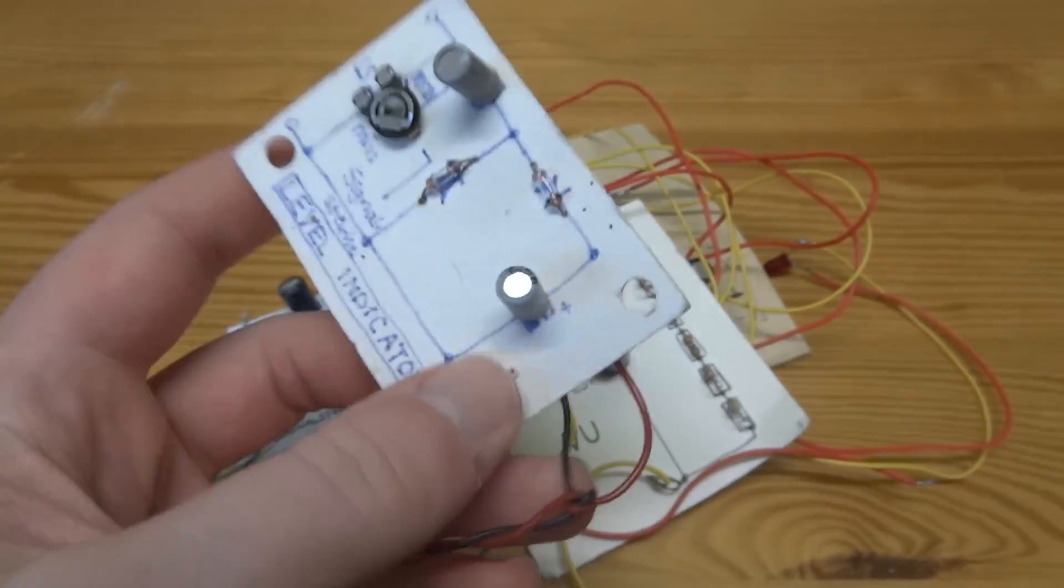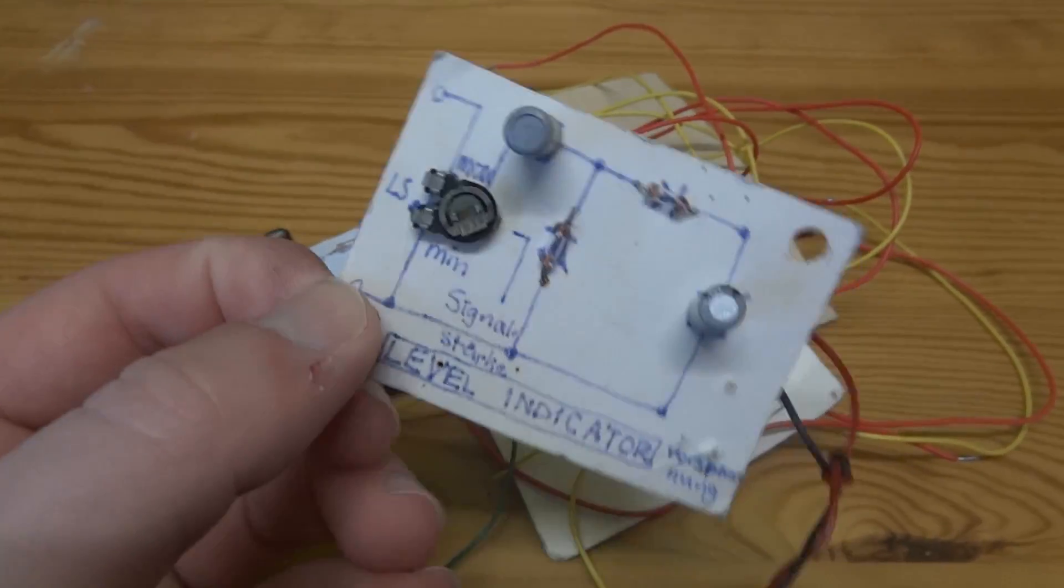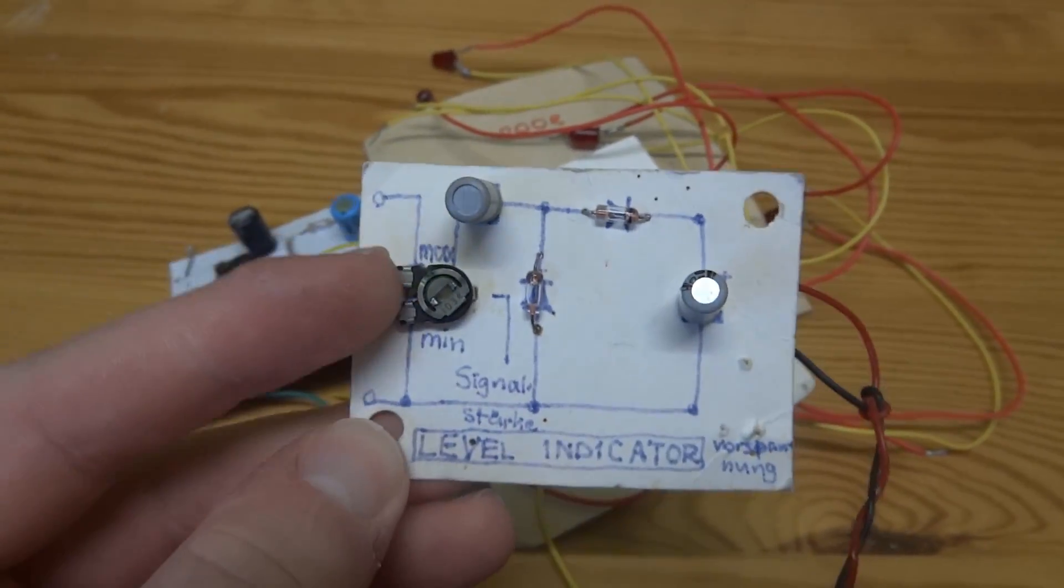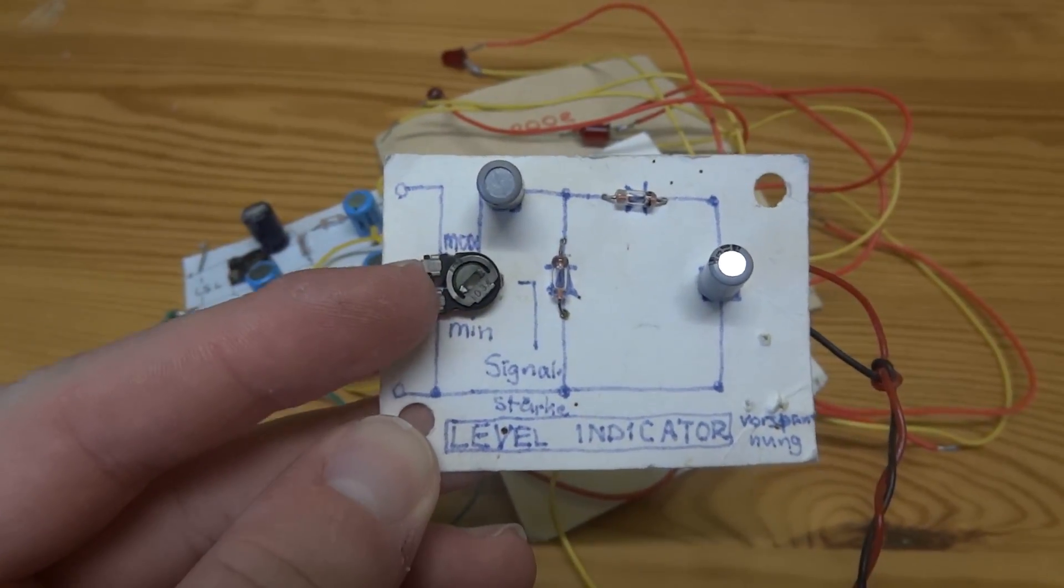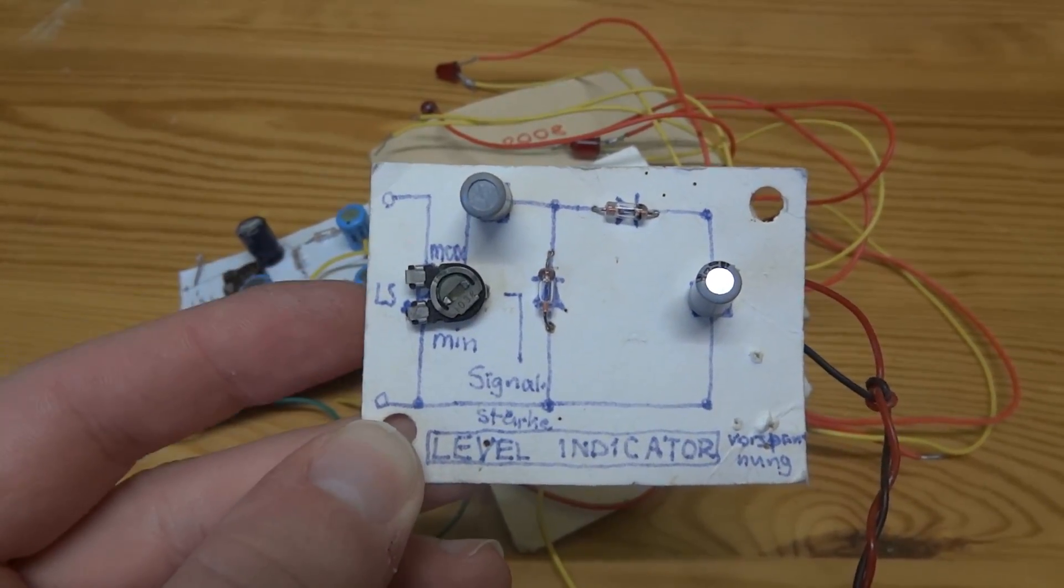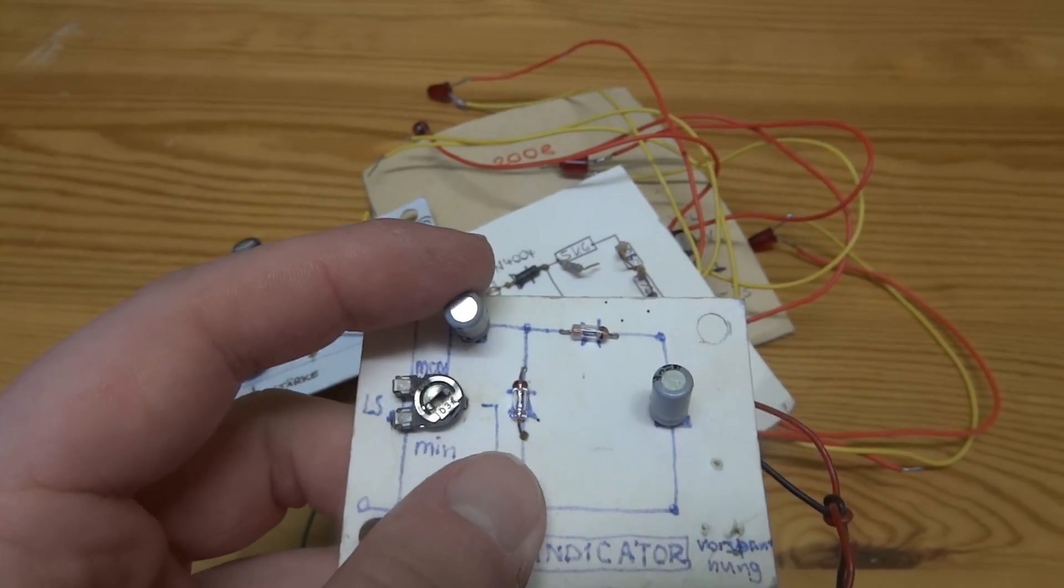So what we have right here is, you can already read it, a level indicator. There is a signal strength potentiometer at the input. This would get its input from the speaker output of an amplifier. We then have a little capacitor.